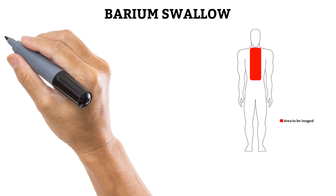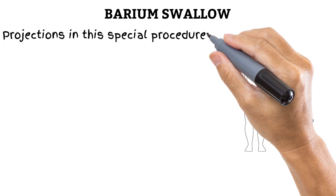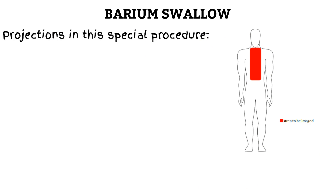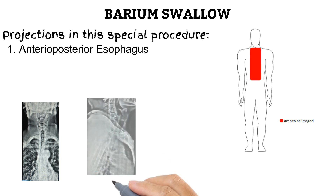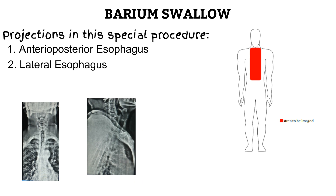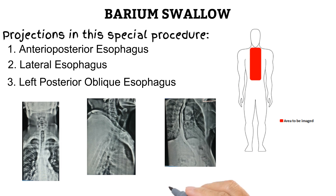Before we go further, we should draw your attention to a few projections that are used in the barium swallow. They include an anterior-posterior, lateral, and left-posterior oblique of the esophagus. You might want to brush up on these projections before going forward in the video.